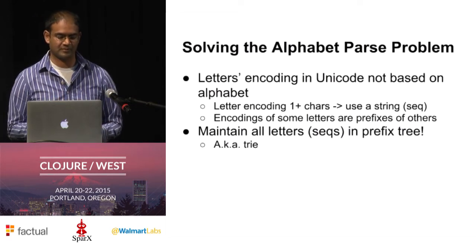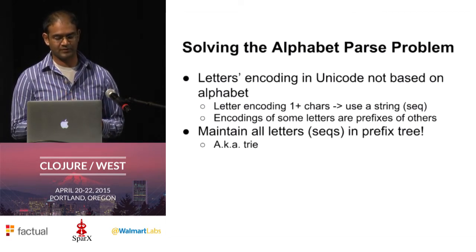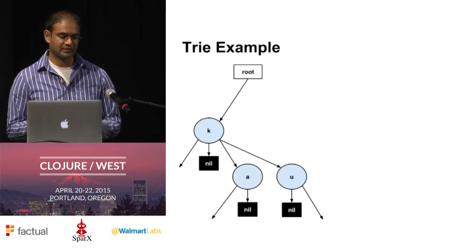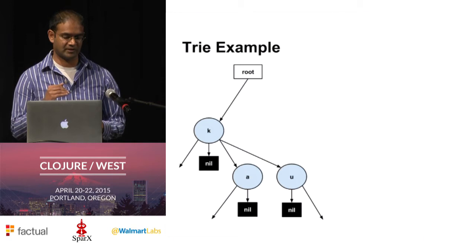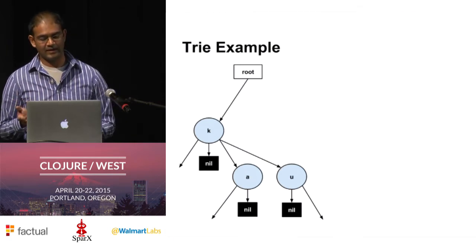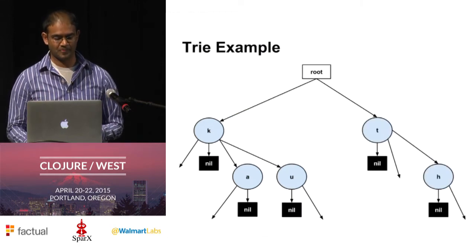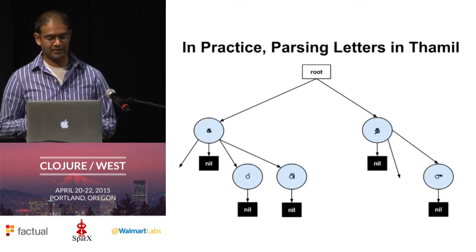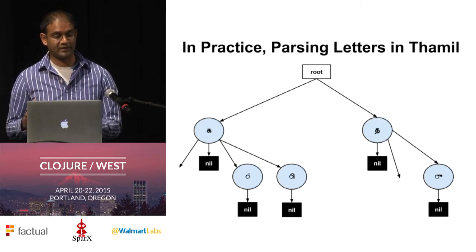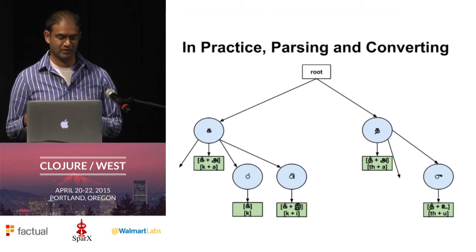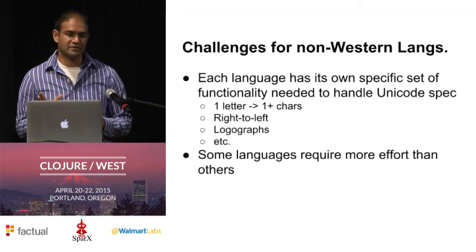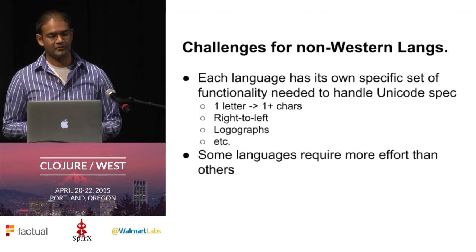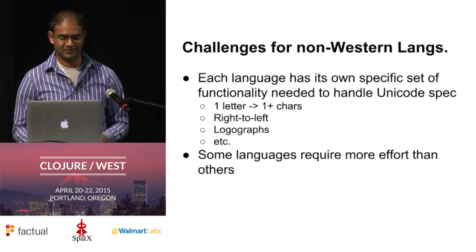To explain how I solved the parsing problem: when you represent all the Tamil letters as strings, it turns out some of them are prefixes of another, and that lends itself to a prefix tree, also known as a trie. A trie is a tree where sequences are represented as paths from the root to a leaf node. This trie has k, ka, ku, and to it we add t and th. You can also attach a value to every sequence and it becomes associative, like a map. This is how I parse a string into its constituent phonemes, or a word into its constituent phonemes. Every language has its own specific characteristics that need to be supported, and the work may be harder for some languages than others — if you're dealing with American English, your job is the easiest.